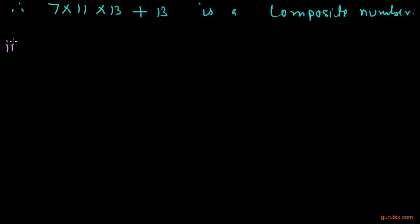Let me solve the second part of this question. We have to show that 7×6×5×4×3×2×1 + 5 is a composite number and if we take 5 common from these two terms, term 1 and term 2.